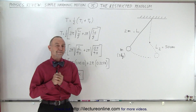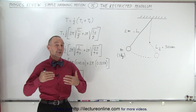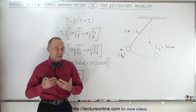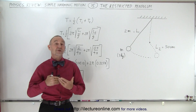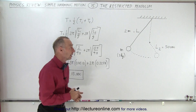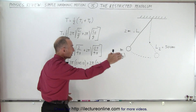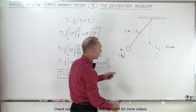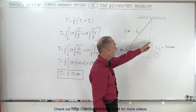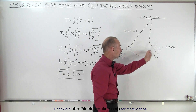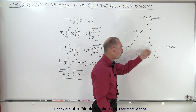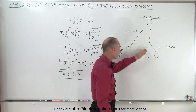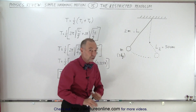Welcome to iLecter Online. Here we're reviewing what to do when we have what we call a restricted pendulum. A pendulum is able to swing in one direction freely, but on the other direction, the string hits a peg and only the bottom part of it will then swing outward, and when it comes back the whole thing will swing back.